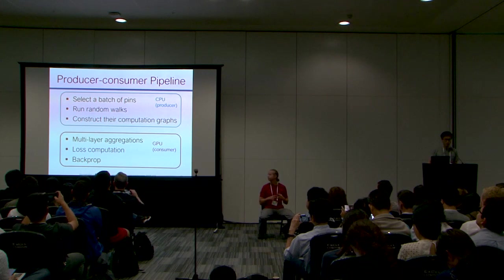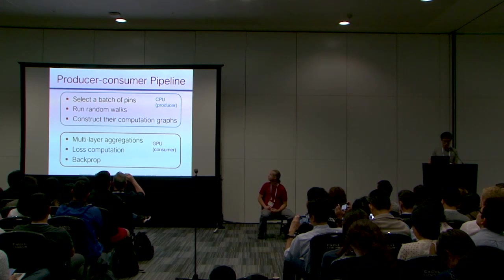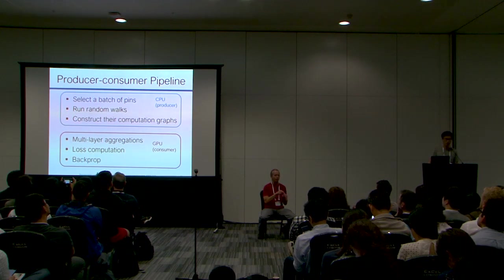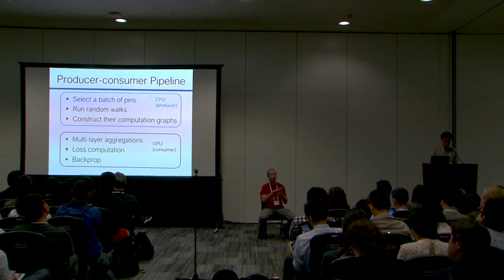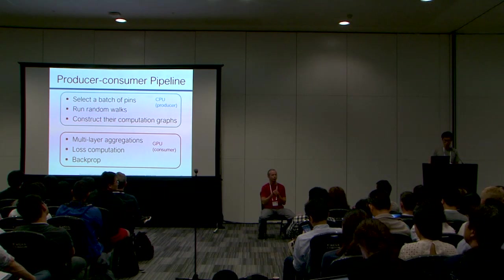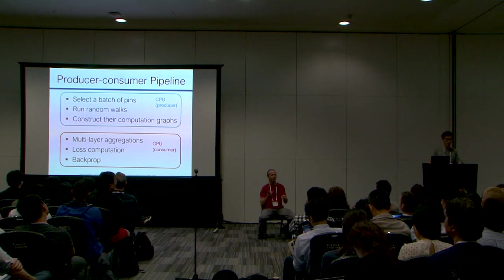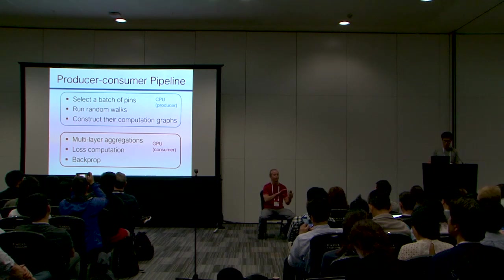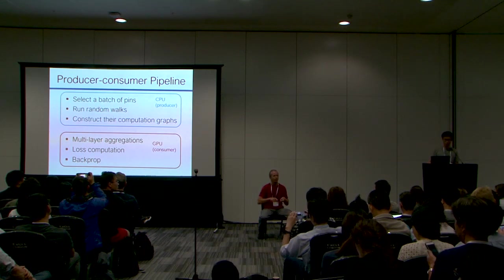We also have a producer-consumer pipeline. During training, two things happen in parallel: the CPU selects a batch of pins, runs the random walk subsampling, and constructs the computation graph for each node in the mini-batch, while the GPU simultaneously performs multi-layer aggregation, loss computation, and back-propagation. When the GPU is doing back-propagation for the current mini-batch, the CPU is already preparing the computation graph for the next batch, which significantly reduces the performance overhead.